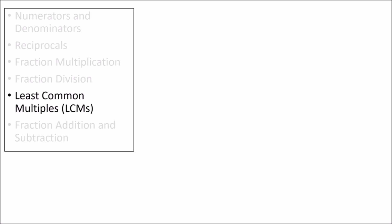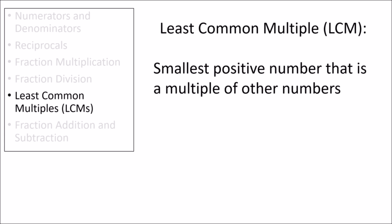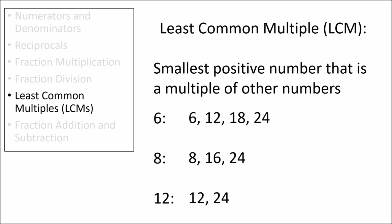Before we discuss fraction addition and subtraction, we need to review a slightly different concept known as the least common multiple. The least common multiple is the smallest positive multiple of other numbers. Let's find the least common multiple of 6, 8, and 12. We'll write out the multiples of each number until we find the least number that is common between them. As we write out the multiples of these three numbers, the first multiple they share in common is 24. So the least common multiple of 6, 8, and 12 is 24.